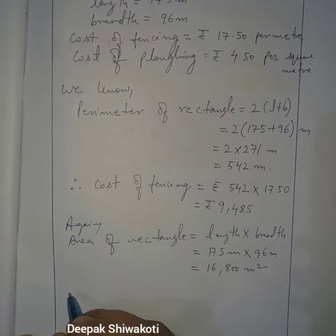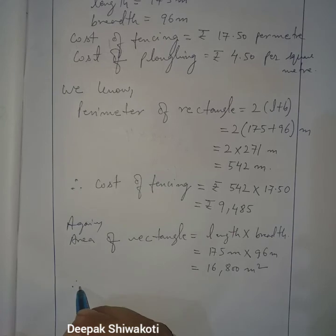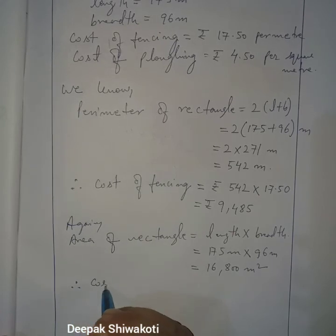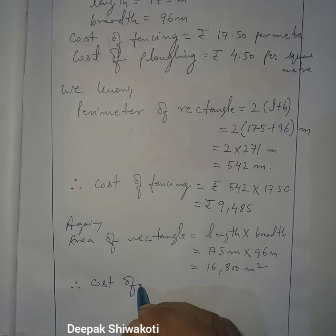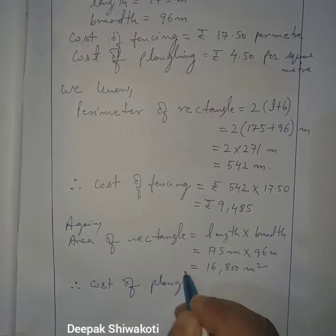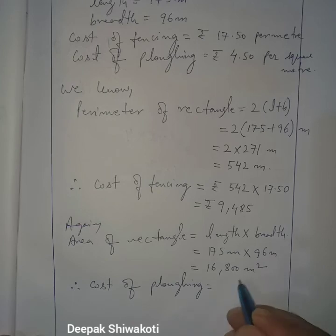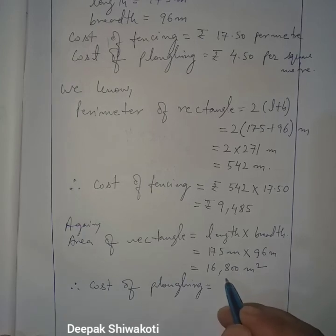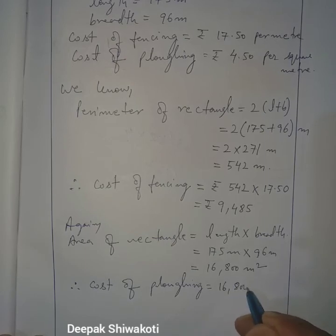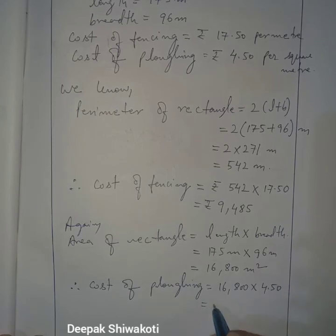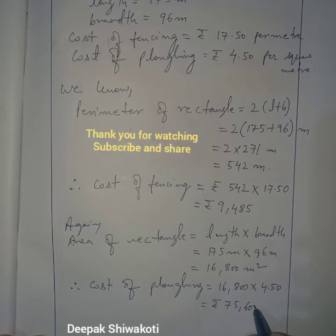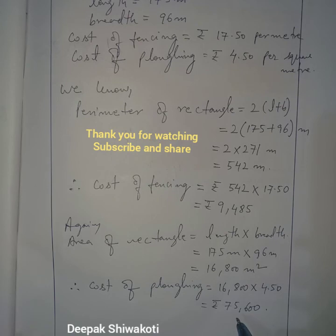Cost of plowing the garden equals the area into the price per square meter, that is 16,800 into 4.50, which equals rupees 75,600. So this many rupees is required to plow the field.